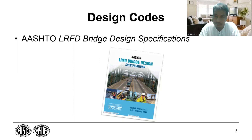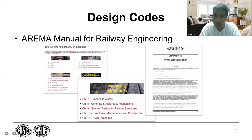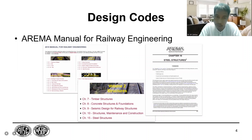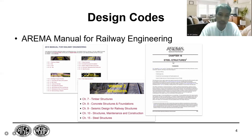It is worthwhile to occasionally look at what is inside these documents. There are other types of manuals, codes, and standards, such as the AREMA Manual for Railway Engineering — the go-to standard in the United States for railway engineering. The 2015 edition shown here includes Chapter 15 on steel structures, Chapter 7 on timber structures, Chapter 8 on concrete structures and foundations, and chapters on seismic design and structure maintenance and construction.